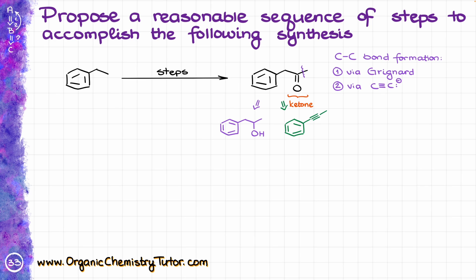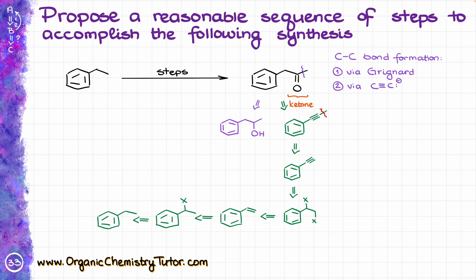To make the green alkyne, I would have to start with a terminal alkyne — essentially creating this carbon-carbon bond here — which means my terminal alkyne predecessor would have to look like this, and that can be easily synthesized from my starting material in four steps.